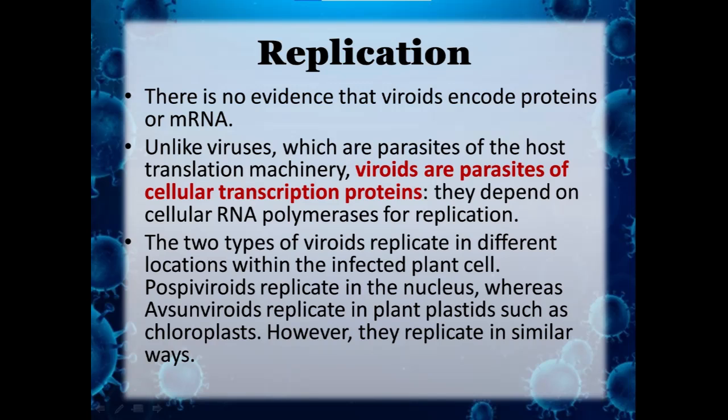How do viroids replicate? There is no evidence that a viroid encodes proteins or mRNA. Unlike viruses, which are parasites of the host translational machineries, viroids are parasites of cellular transcription proteins — they depend on cellular RNA polymerases for replication. The two viroid families replicate in different locations: Pospiviroidae replicates in the nucleus, whereas Avsunviroidae replicates in plastids such as chloroplasts. However, they replicate in a similar fashion.